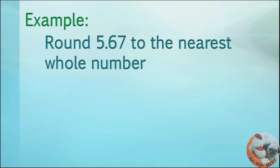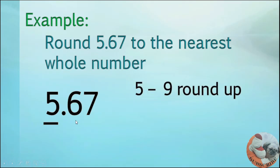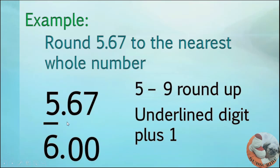Round 5 and 67 hundredths to the nearest whole number. The whole number is 5. Then look at what is to the right of 5 — it's 6. The rule when it's 5 to 9 is to round up, meaning the underlined digit plus 1. So the 5 becomes 6. If you round 5 and 67 hundredths to the nearest whole number, the answer is 6.